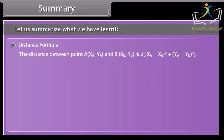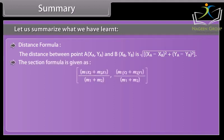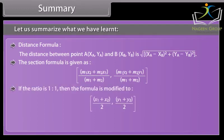Summary. Let us summarize what we have learned. Distance formula is the distance between point A, XA, YA and B, XB, YB is under root of XA minus XB whole square plus YA minus YB whole square. The section formula is given as M1 X2 plus M2 X1 by M1 plus M2, M1 Y2 plus M2 Y1 by M1 plus M2. If the ratio is 1 is to 1 then the formula is modified to X1 plus X2 by 2, Y1 plus Y2 by 2. Area of triangle is 1 by 2 into X1 into Y2 minus Y3 plus X2 into Y3 minus Y1 plus X3 into Y1 minus Y2.